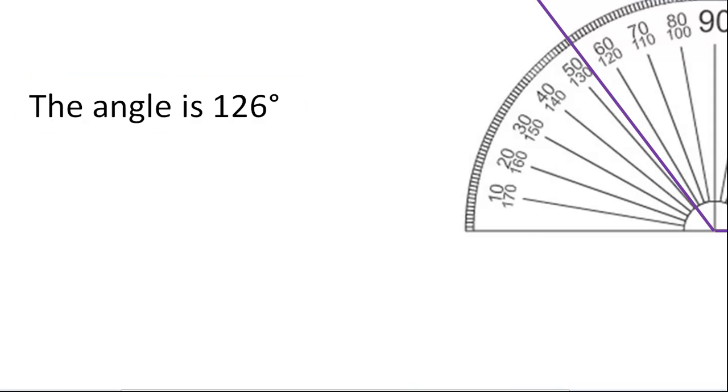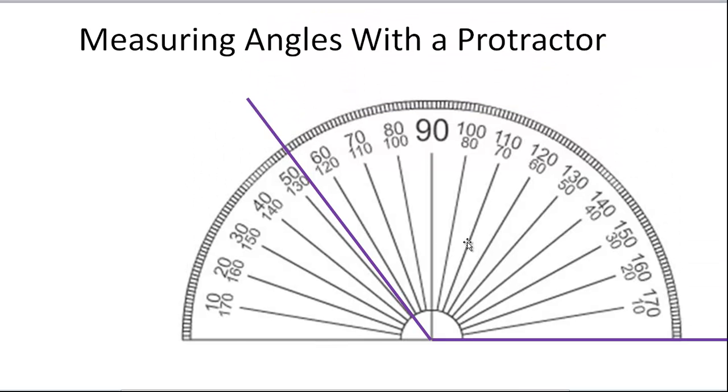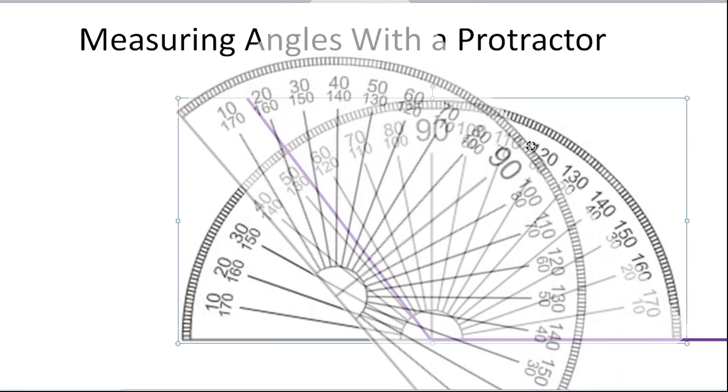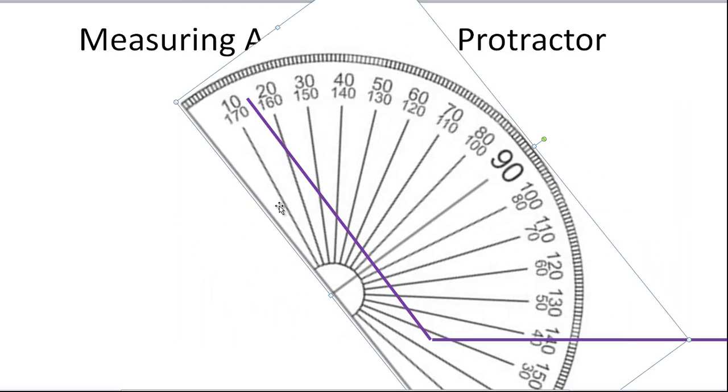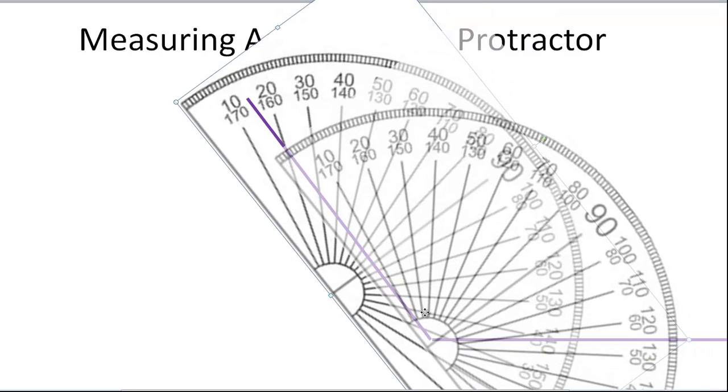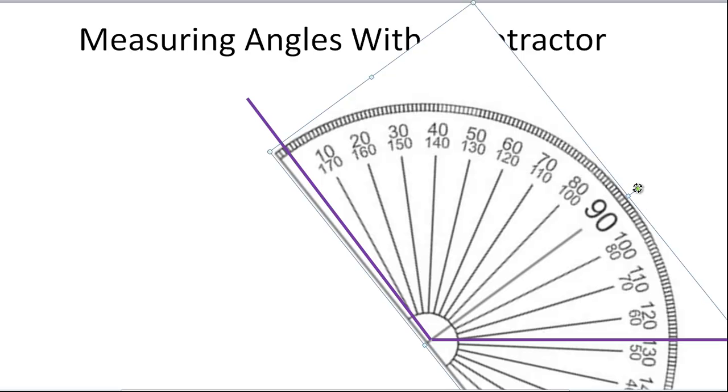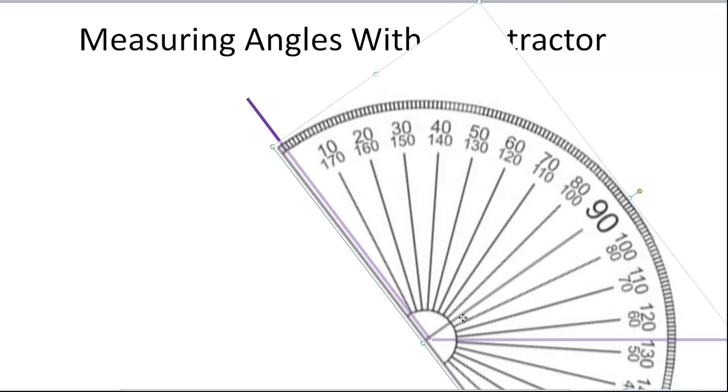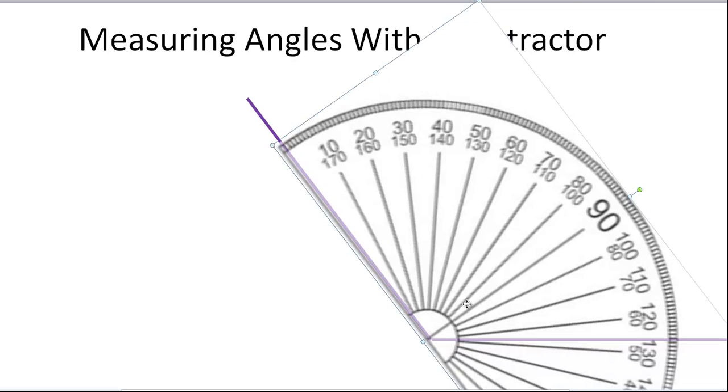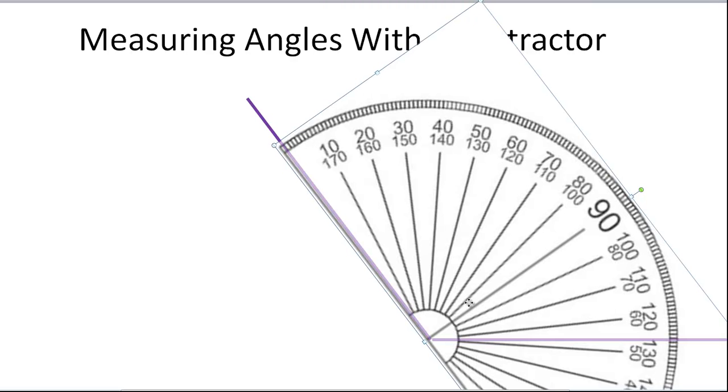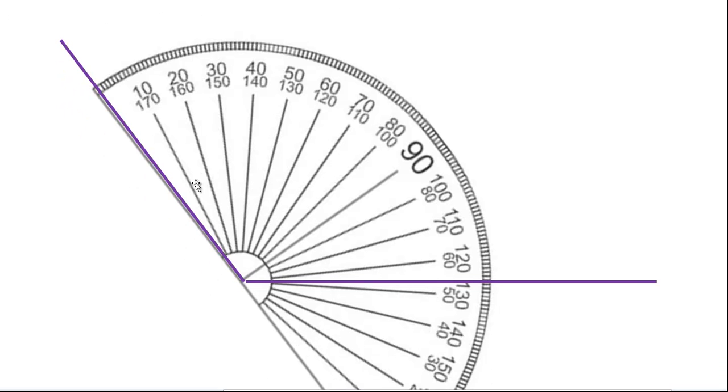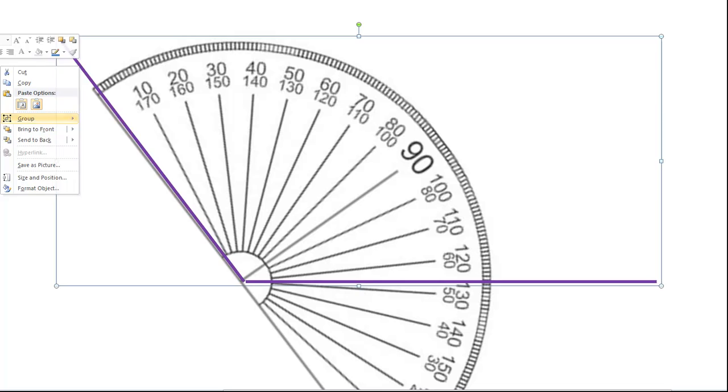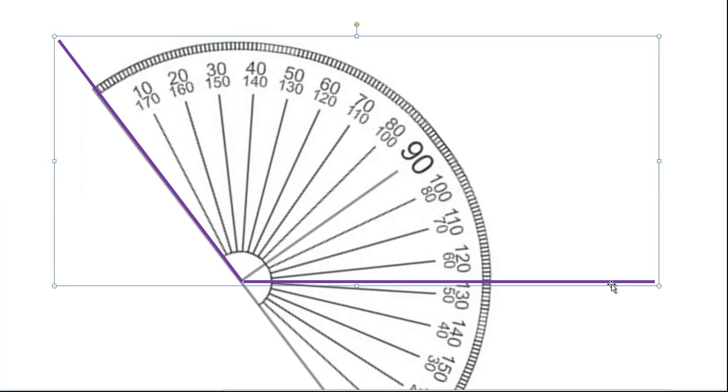Now, if you want to have the protractor so that the bottom edge is right on here, then I would just need to rotate this. So again, I'm rotating it so that this line right here is parallel to this side. So that's what I'm doing. It's not quite perfectly parallel, so I'll rotate it just a little bit more. That's pretty close there. It's hard to get it exactly on, but that's pretty close.